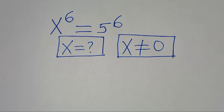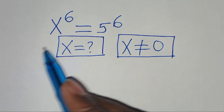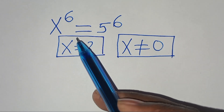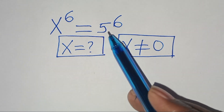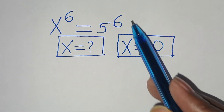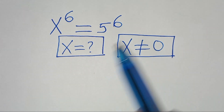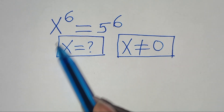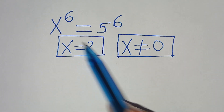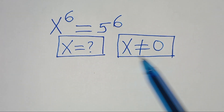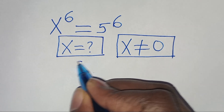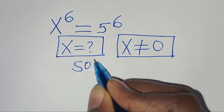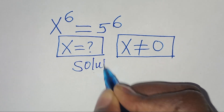Hello everyone, you are welcome to solve this nice exponential equation, which is x to the power of 6, equal to 5 to the power of 6. So what are the values of x, given that x is not equal to 0? Let's solve for all values of x from here.